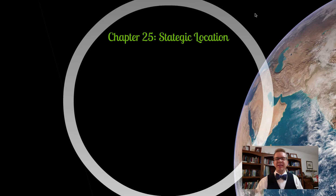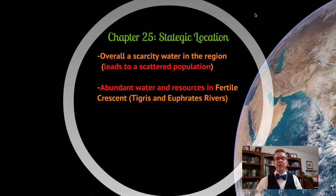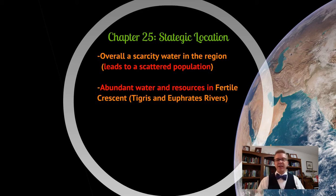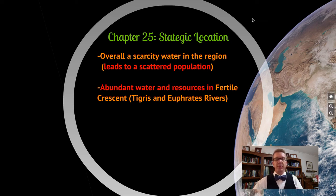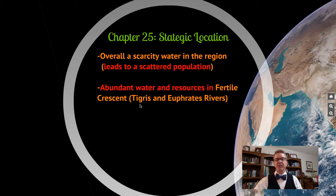Starting with chapter 25, the Middle East is a strategic location because of its position. There are problems like scarcity of water — it's a dry, barren place in many areas — which leads to a very scattered population that clusters around water sources. However, some areas have abundant water and resources, including the Fertile Crescent region with the Tigris and Euphrates rivers, and lots of resources there.